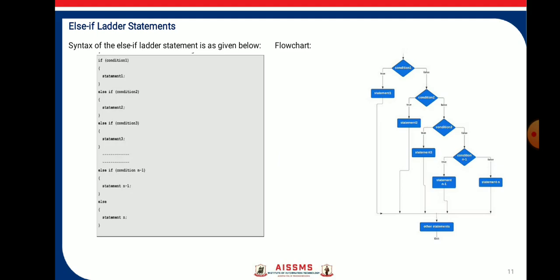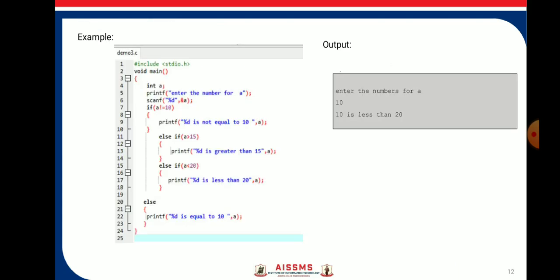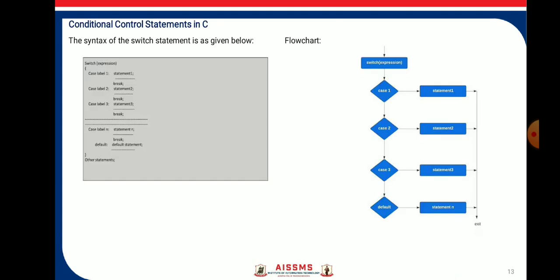Next is the else-if ladder statement, which contains multiple else-if blocks. When any condition is true, the statement under that particular if is executed; otherwise the else block is executed. The if condition is tested first; if true, that block executes; else the next if condition is tested. This process repeats as long as if-else blocks are present. Here is the syntax and flowchart of the if-else ladder statement.